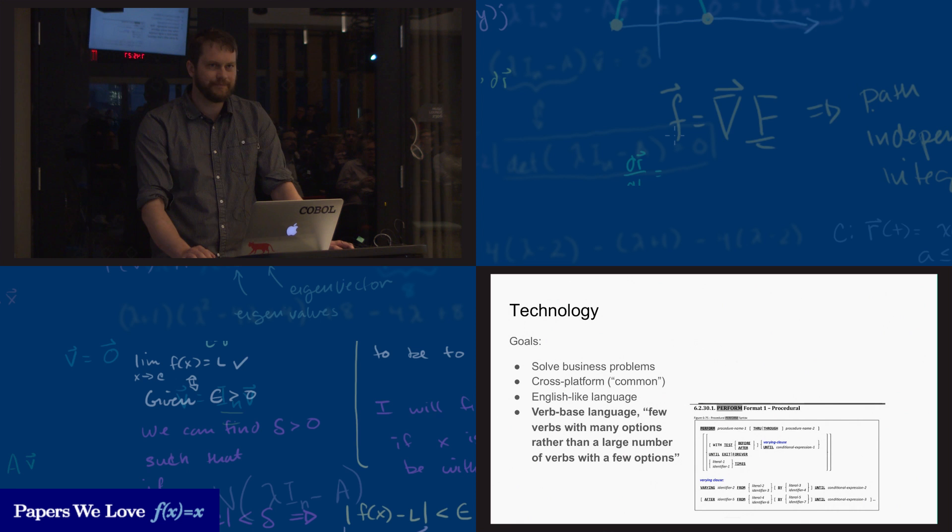The final idea was to have a verb-based language, an imperative language, with as few verbs as possible, with as many options, rather than having a large number of verbs with a few options. One of the consequences of this that I'll talk about a little more is that you kind of end up with this explosion of syntax around getting a small number of verbs to do a lot of different things.